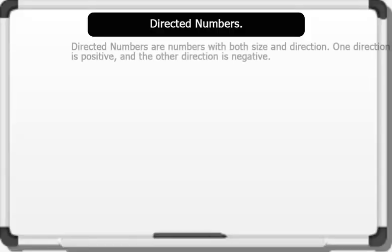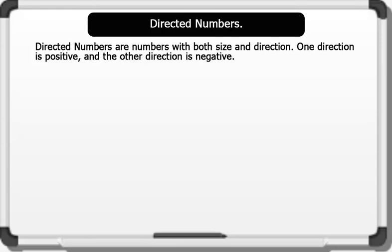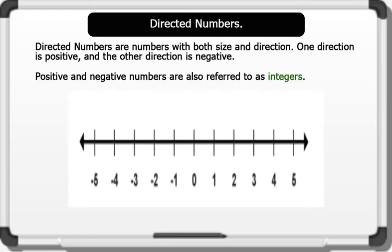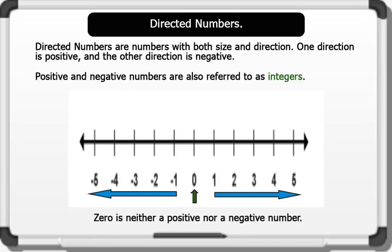Directed Numbers are numbers with both size and direction. One direction is positive and the other direction is negative. Note that positive and negative numbers are also referred to as integers. The diagram on the board is a number line showing the direction of numbers. The numbers after 0 towards the left are known as negative numbers or negative integers — these numbers have a negative sign attached to them. While the numbers after 0 towards the right are called positive numbers or positive integers — these numbers have a positive sign attached to them. Note that these positive signs are sometimes invisible. 0 is neither a positive nor a negative number.